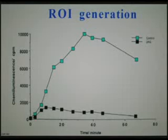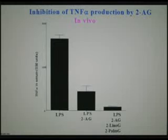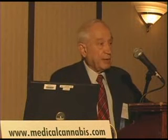The blue line is what we see without the 2AG. The black line is where we see 2AG. Then we looked: is that something we see only in the test tube? The answer is no — we see it also in vivo, in animals. So, if that is true, what about cannabidiol? Does it also cause the same things?